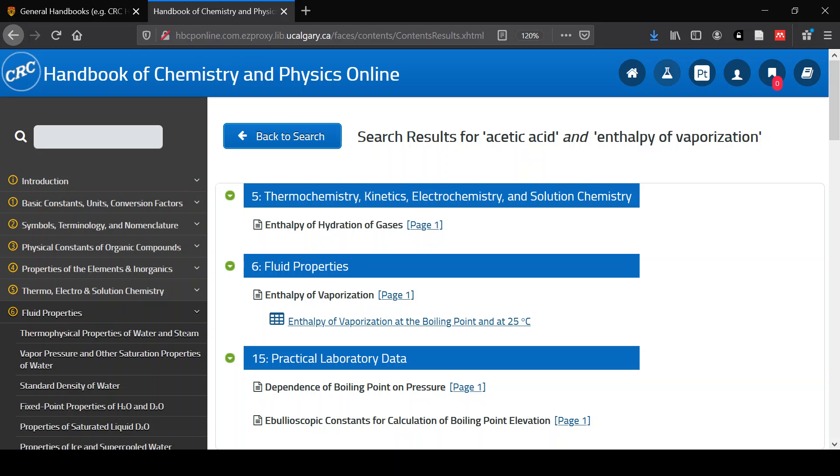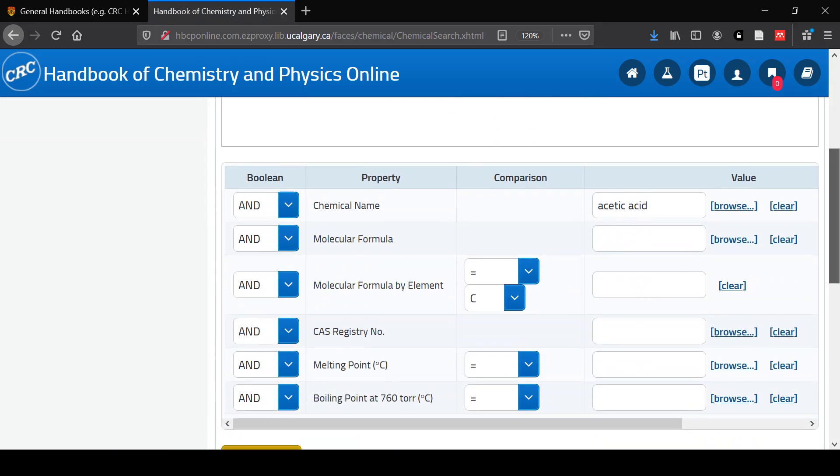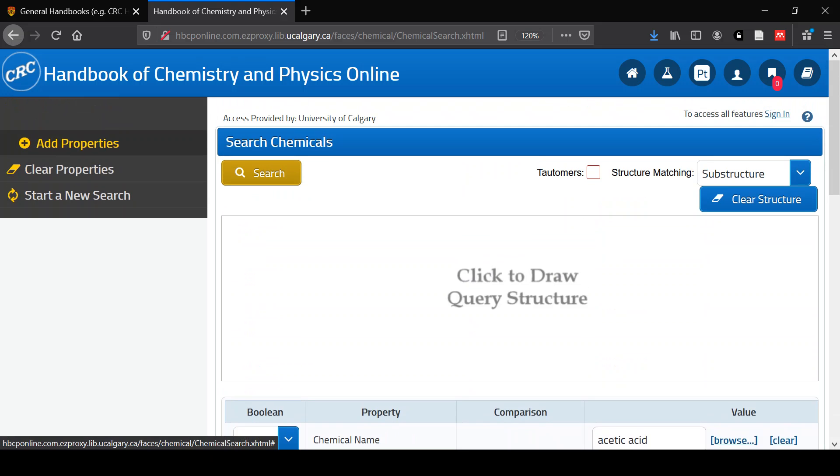The third way you can search and find information is by a chemical search or a substance search. You can draw the structure if you like. You can use any of the property searching here. There's one, two, three, four, five, six listed. However, if you want to add other types of properties or other properties, you can use this add properties button near the top left.